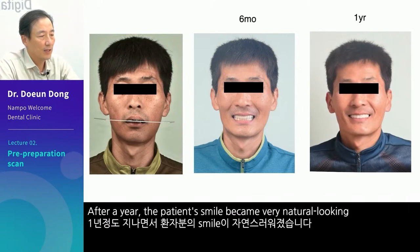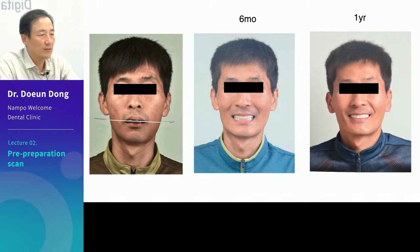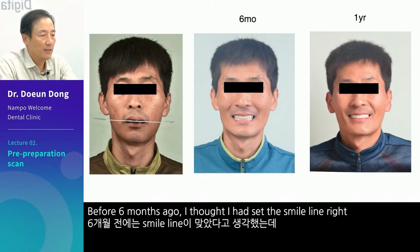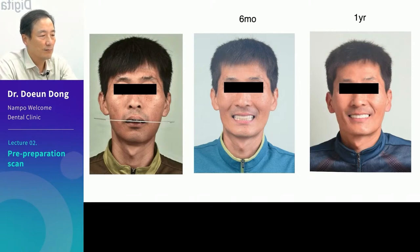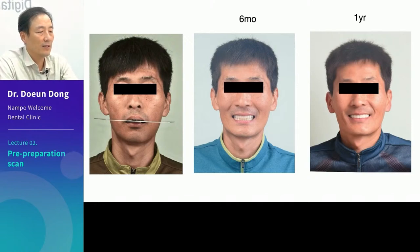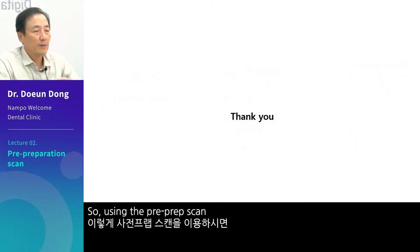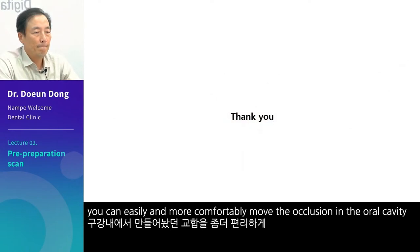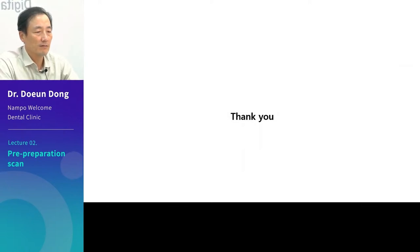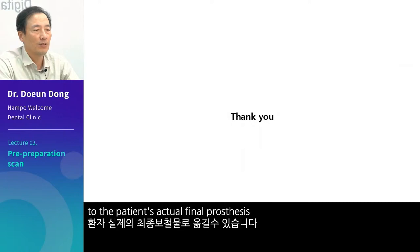This is the initial visit. This is six months after and a year after. After a year, the patient's smile became very natural looking. Before, six months ago, I thought I had set the smile line right — the smile line went up a little, but still it looked very natural. So, using the pre-prep scan, you can easily and more comfortably move the occlusion in the oral cavity to the patient's actual final prosthesis. That was it for today. Thank you.